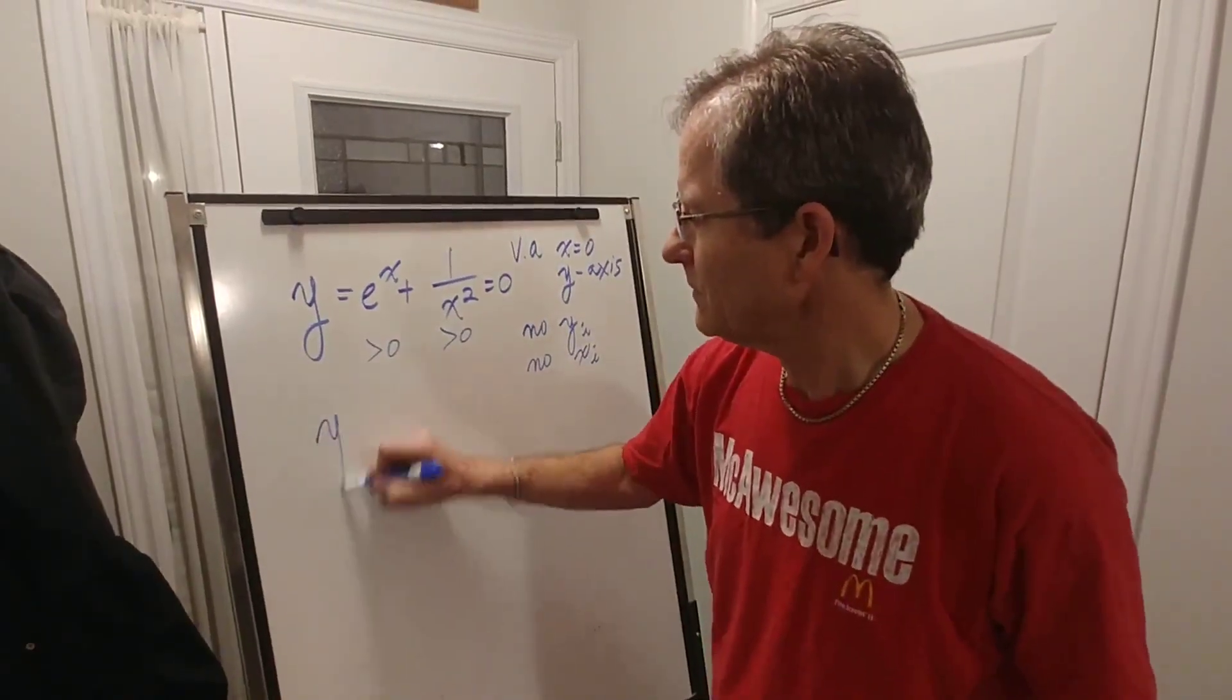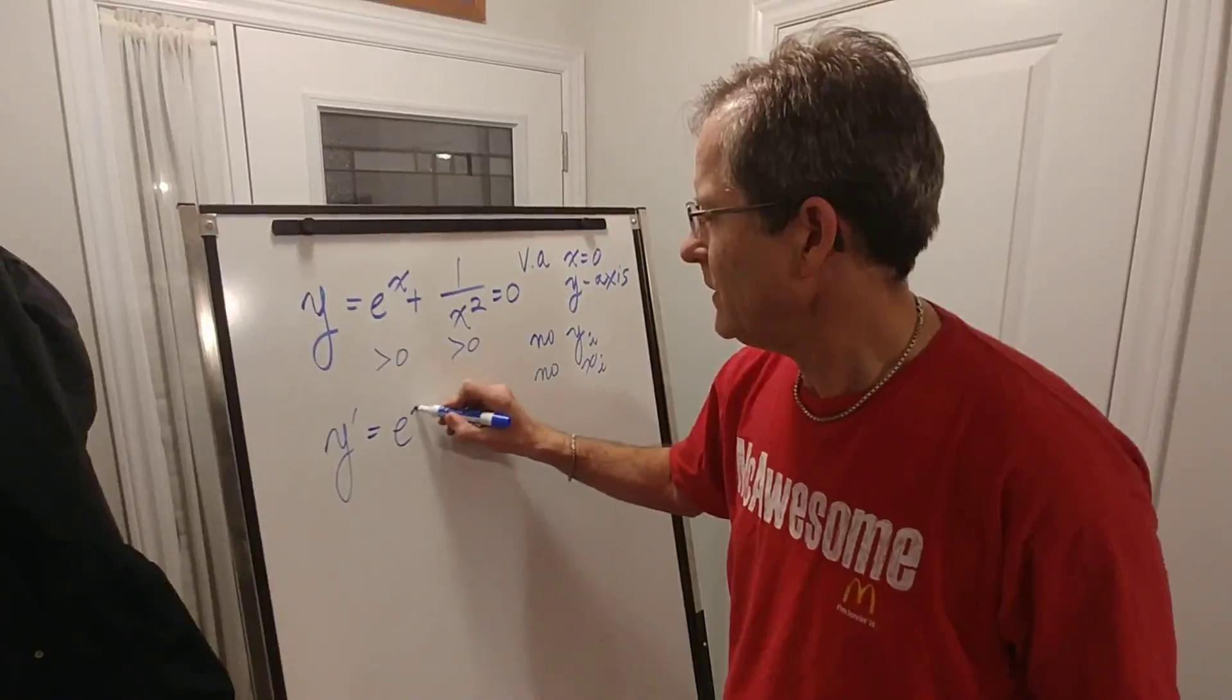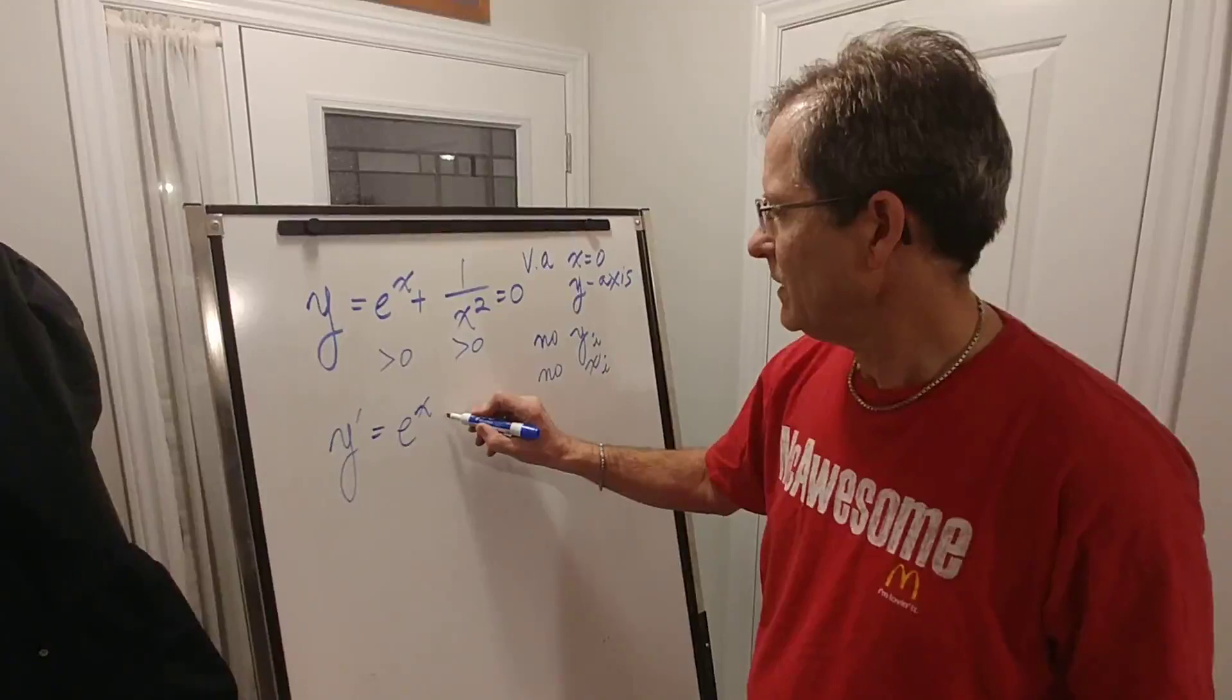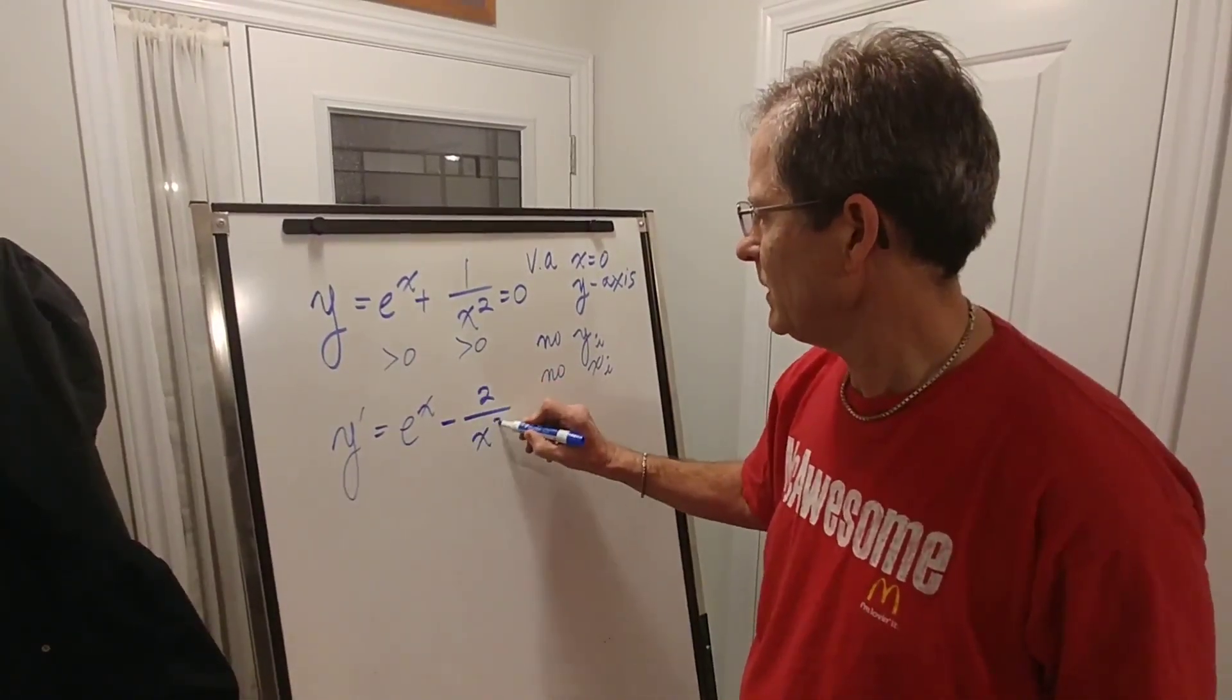Now let's look at the slope, which is the first derivative. The derivative of e to the x is exactly the same thing. That's what's so special about that number. The derivative of that is 2 over x cubed, like we talked about last time.